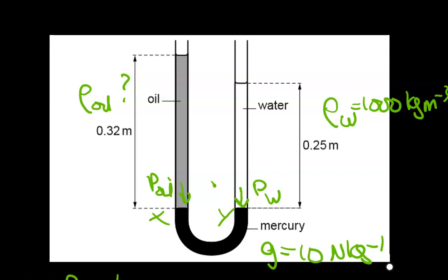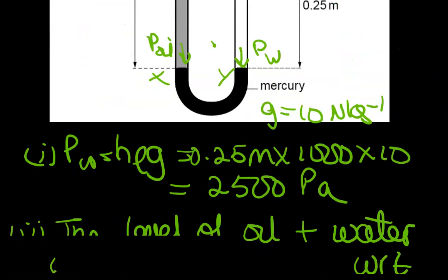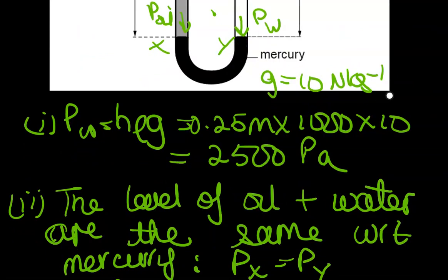The pressure at X is equal to the pressure at Y. To get the pressure at Y, the pressure due to the column of water, it is equal to ρgh. In the question you are told that the density of water is 1000 and the height of the water is 0.25, so I could right away establish that the pressure exerted by the water column is ρgh. I solved it and got 2500.